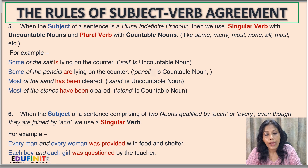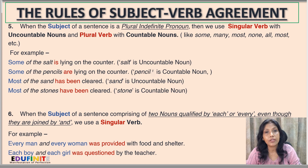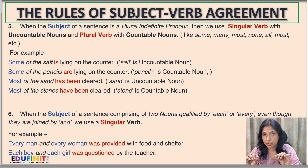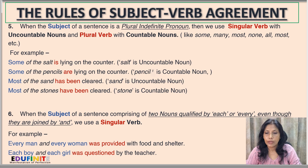Another example of Rule 6: 'Each boy and each girl was questioned by the teacher.' Before 'boy' and 'girl' we have 'each', so we use a singular verb.